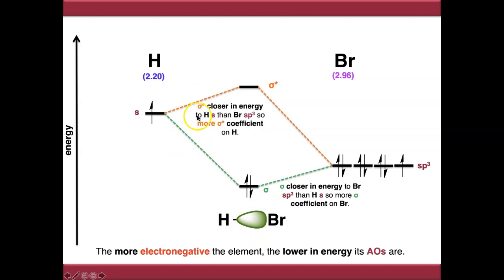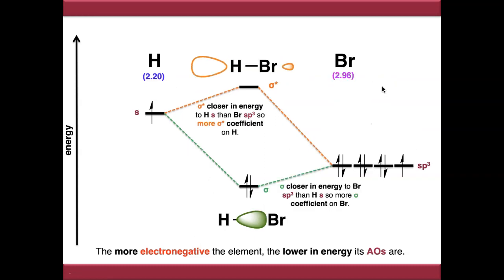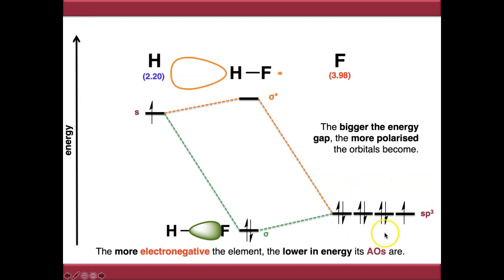The opposite is true of the sigma star antibonding orbital — it is closer in energy to hydrogen, so the sigma star has more orbital coefficient on hydrogen, polarised in the opposite direction. Moving to HF, the atomic orbitals are even lower in energy, making the energy gap even more asymmetric and the polarization even more pronounced. HF is therefore a more polarised bond than HBr, and this is reflected in the orbital shapes.